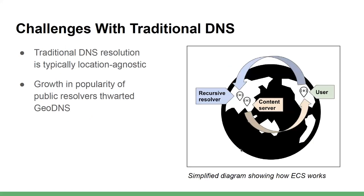Traditionally, CDN providers relied on the recursive DNS server location in order to steer users' traffic to the content servers located closer to them. This worked well for quite some time, but with time the situation changed, and public resolvers became more and more prevalent — the likes of Google DNS, AdGuard DNS, Cloudflare, et cetera. And with time, the recursive location was not a reliable signal anymore.